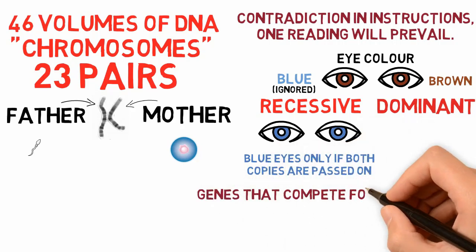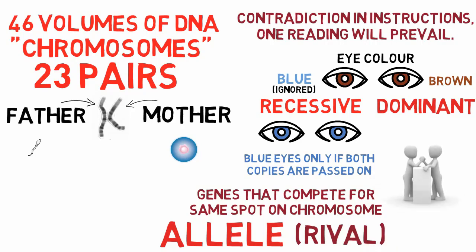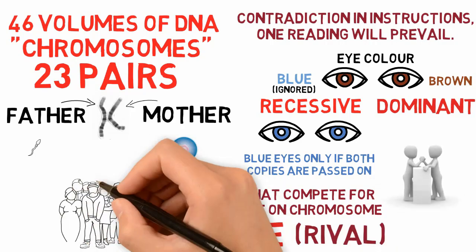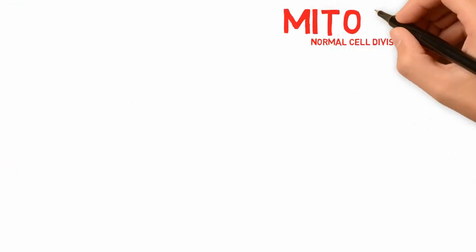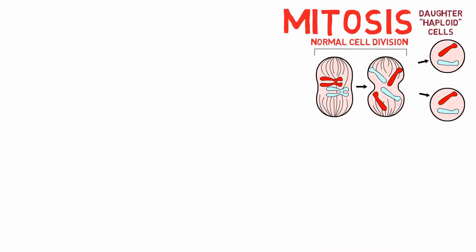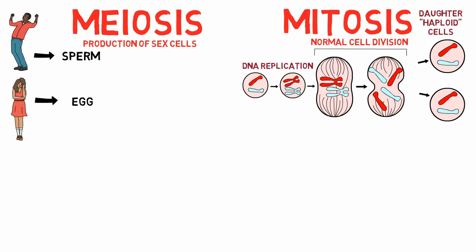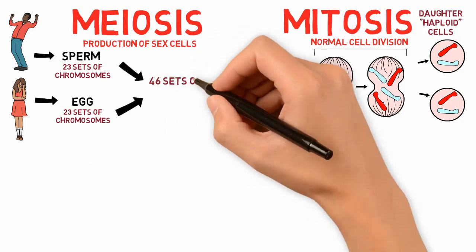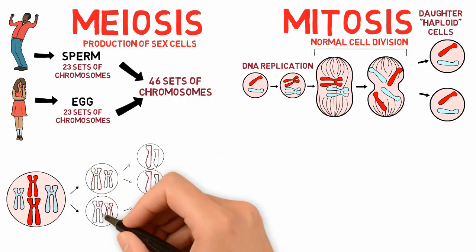Genes that compete for the same slot on a chromosome are called alleles of each other. For genes, Dawkins argues that alleles are synonymous with rivals. Our genes are determined at conception, and when we refer to the gene pool, we are referring to the genes of the population. Normal cell division is called mitosis. Another kind of cell division, called meiosis, occurs in the production of sex cells — sperm or egg — which contain only 23 sets of chromosomes, not 46 like other somatic cells, because they fuse in sexual fertilization to make a new cell with 46.